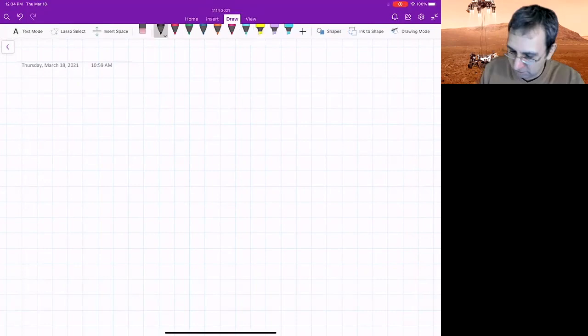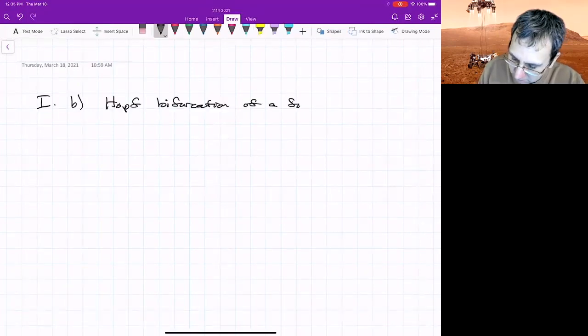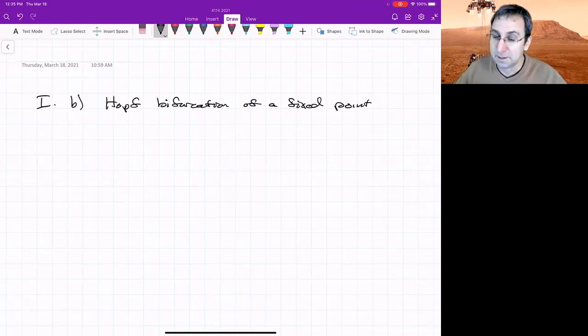So this is a bifurcation of a fixed point, the Hopf bifurcation of a fixed point. Other people have worked on this, so you might see it called the, including Poincaré, like the Poincaré-Andronov-Hopf bifurcation, but Hopf's name is mostly associated with it. I think he's a German mathematician.